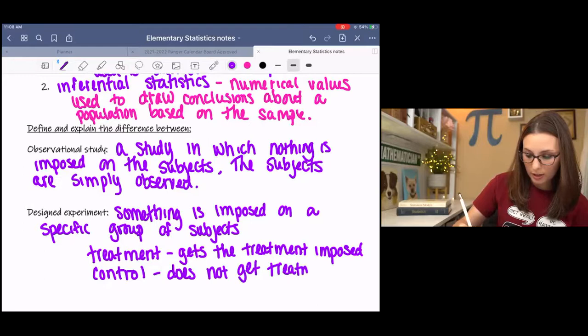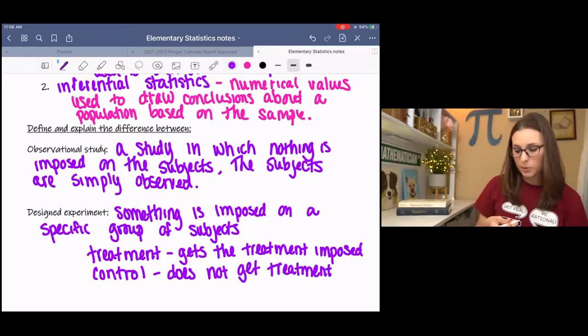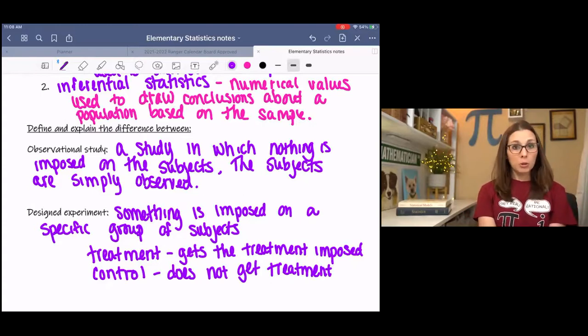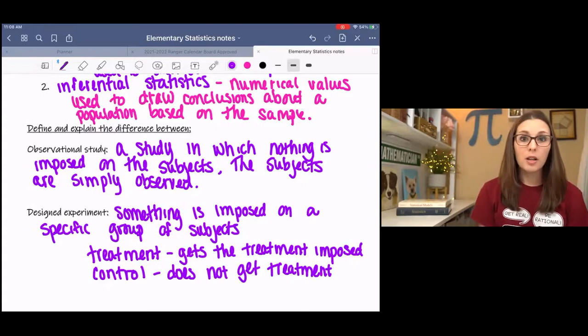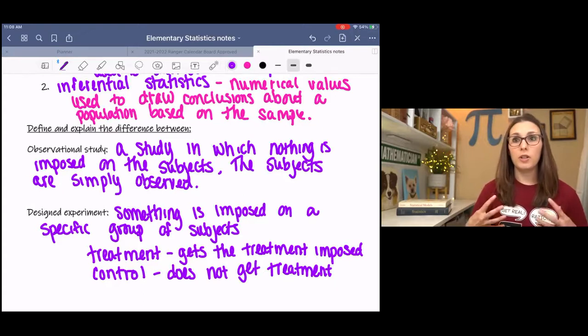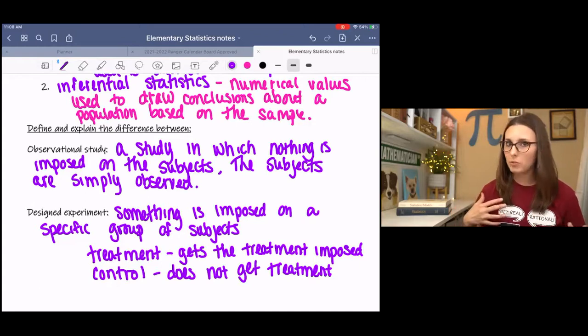But in a blind experiment, the control group doesn't know that they're not getting it. And then in a double blind experiment, the people imposing and the people receiving don't know. And then that way it prevents, like if the doctors know that their group is getting the drug, then they may treat them differently than the group who's not getting the drug.